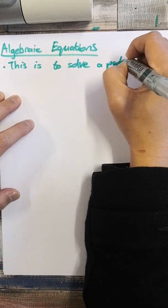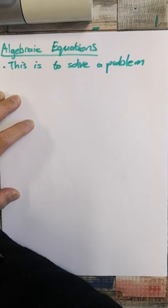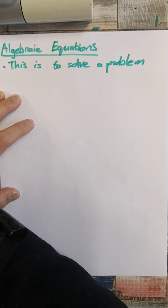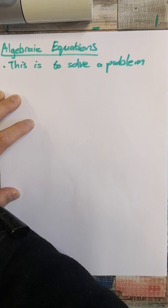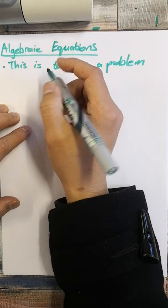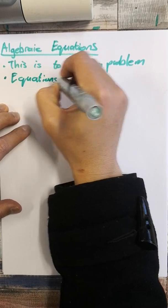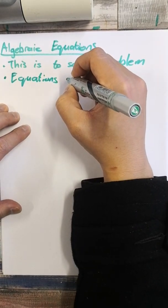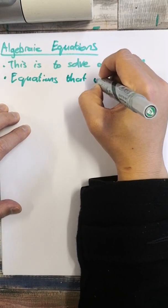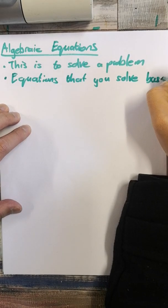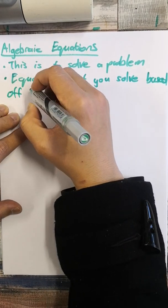If you want to know how high a wall is and how quickly you're going to crash into that wall, you'll use an equation to solve that. If you want to know how they got to the moon, they used mathematical equations. Everything around us that can use logic to solve, we're going to be using equations. Equations are information that you solve based off information given.